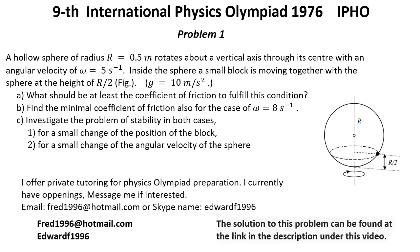Problem number 1. A hollow sphere of radius R equal 0.5 meters rotates about a vertical axis through its center with an angular velocity of omega equal 5 radians per second. Inside the sphere a small block is moving together with the sphere at the height of R over 2. G equal 10 meters per second square. Question A: What should be at least the coefficient of friction to fulfill this condition?